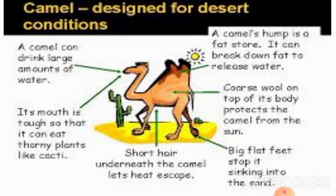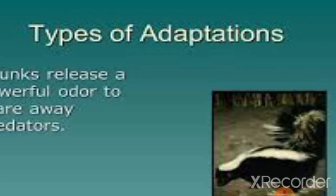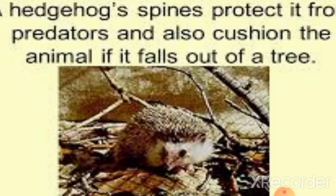Animals such as the cheetah are able to survive in their habitat by having great speed so they can catch their prey. Animals like skunks release a powerful odor to scare away predators. Hedgehogs have spines all over their body to protect them from other animals.